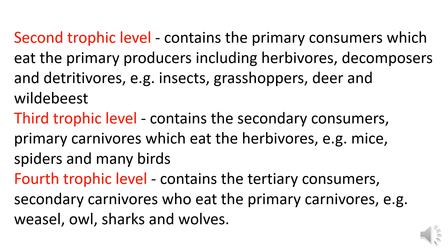The third trophic level contains the secondary consumers, or primary carnivores, which eat the herbivores — like mice, spiders, and birds. The fourth trophic level contains the tertiary consumers, or secondary carnivores, who eat the primary carnivores — like weasels, owls, sharks, and birds.